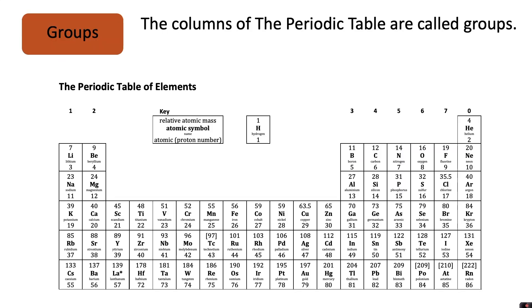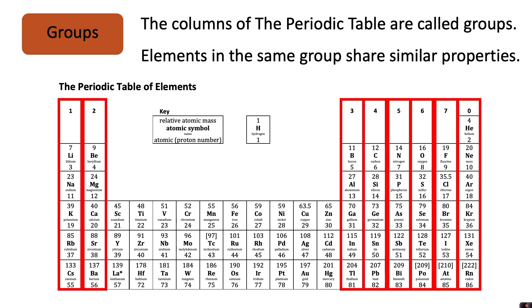The columns of the periodic table are called groups. Elements in the same group share similar properties so this means they will have similar melting points and boiling points and will react in similar ways.